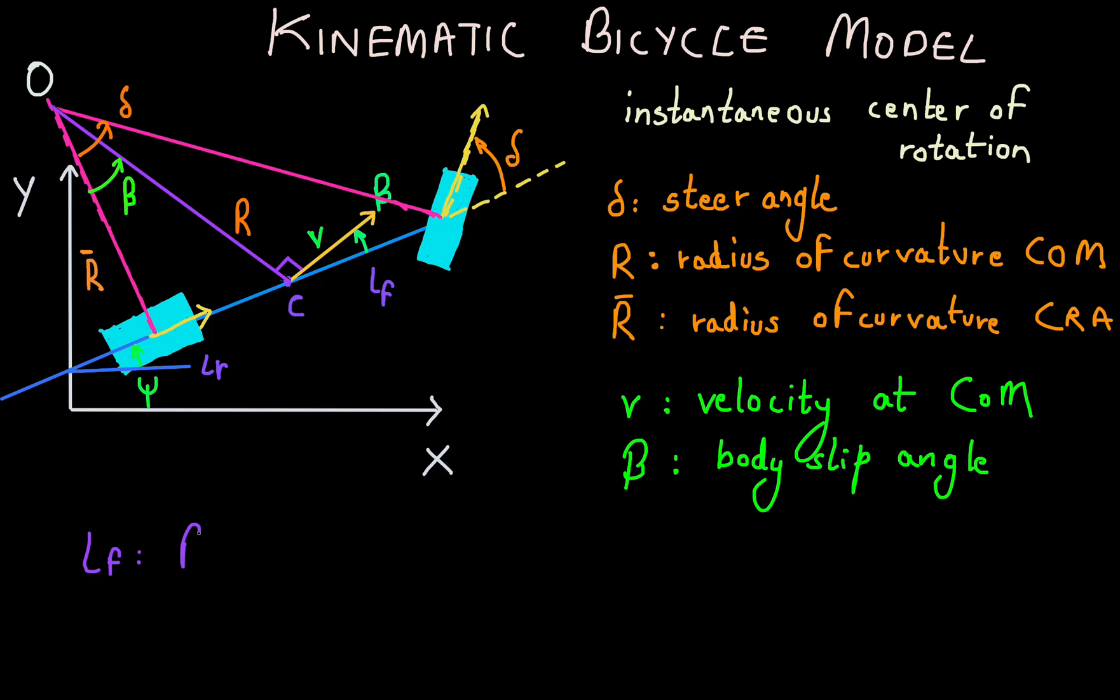Now L subscript F is the distance of the front axle or wheel from the center of mass. Similarly, L subscript R is the distance of the rear axle or wheel from the center of mass. Psi is the heading angle and C of course is the center of mass itself.